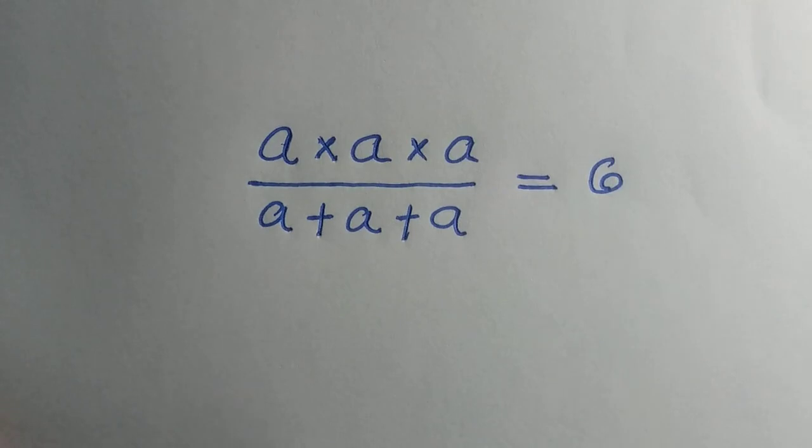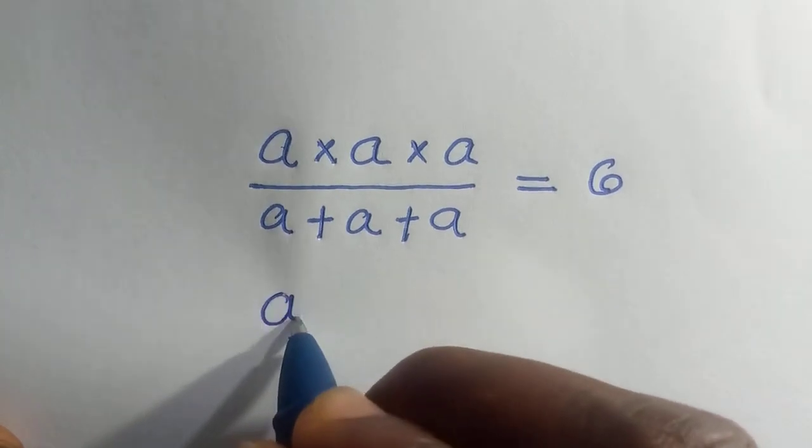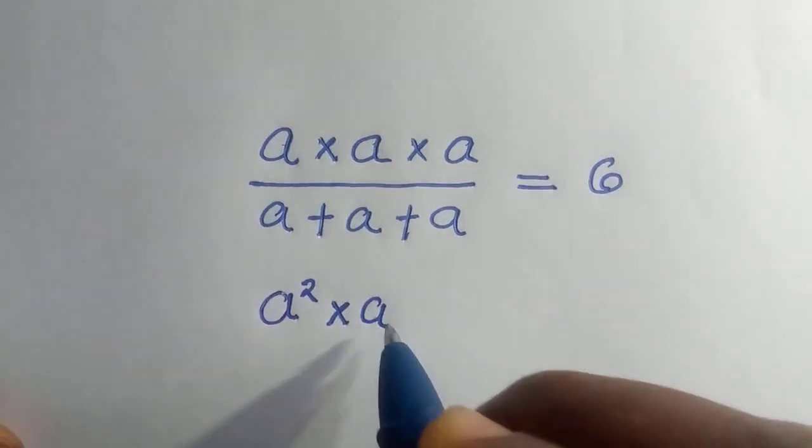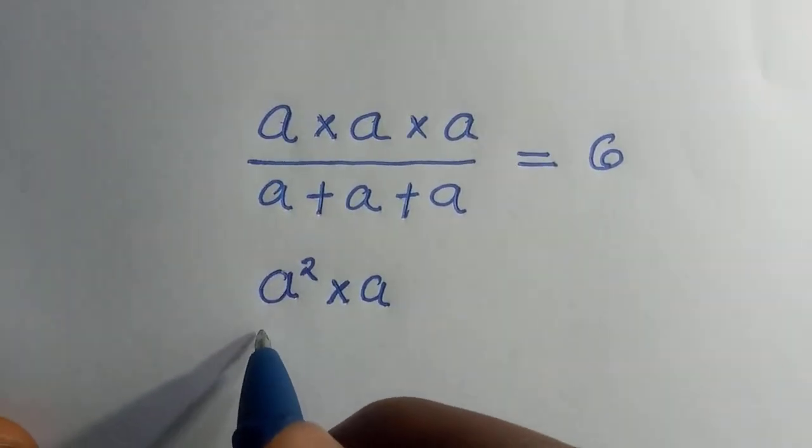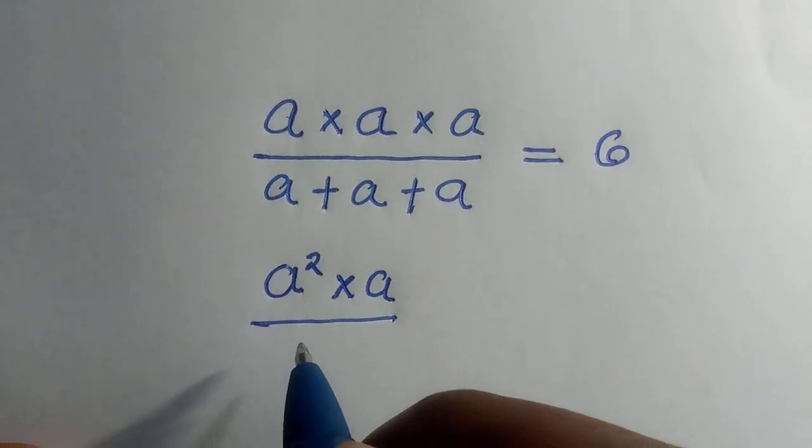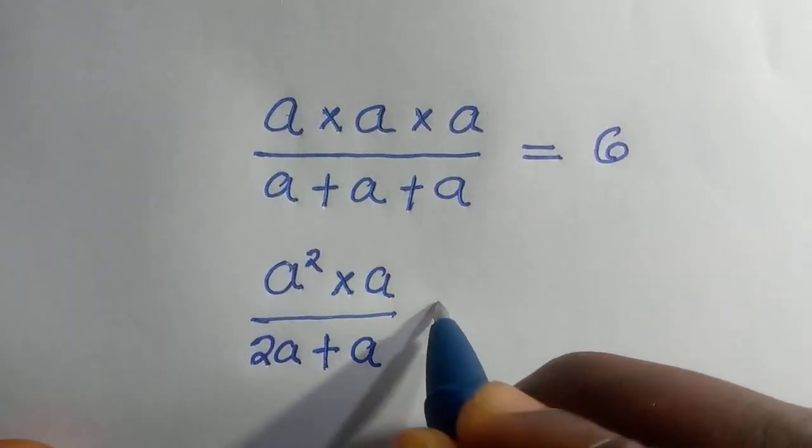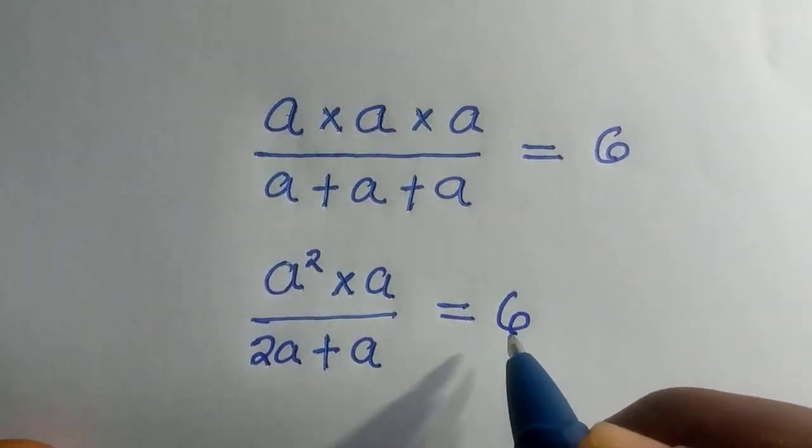To solve this, we are going to multiply all these a's together. When a multiplied by a, we have it as a squared, then a is multiplied by the second a, divided by a plus a is given as 2a plus a equals 6.